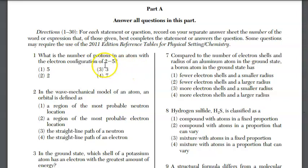Question 1, what is the number of protons in an atom with the electron configuration of 2-5? The total number of electrons is 7, and since it's an atom, protons equal electrons. Our answer would be choice 4, which is 7 protons. For question 2, in the wave mechanical model of the atom, an orbital is defined as a region of the most probable electron location, which is choice 2.